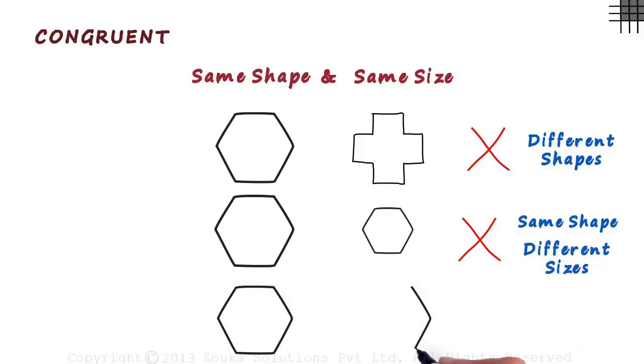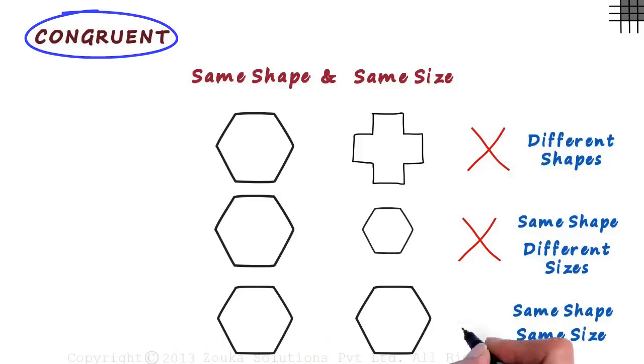But what about these two shapes? They have the same shape as well as the same size. They are congruent figures.